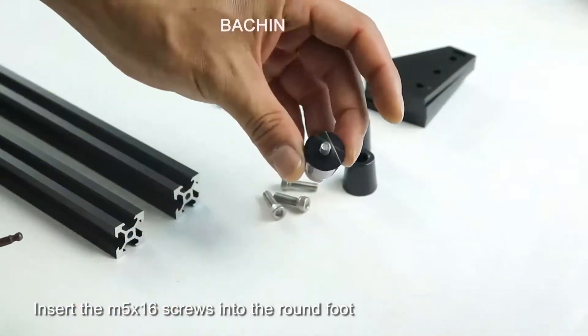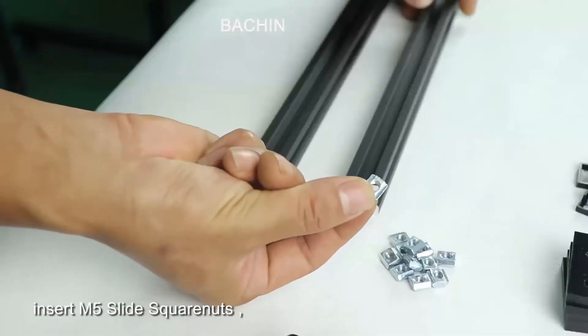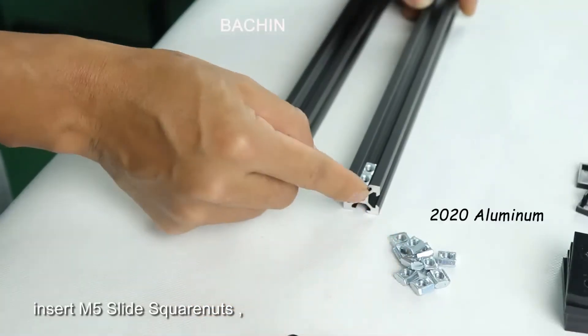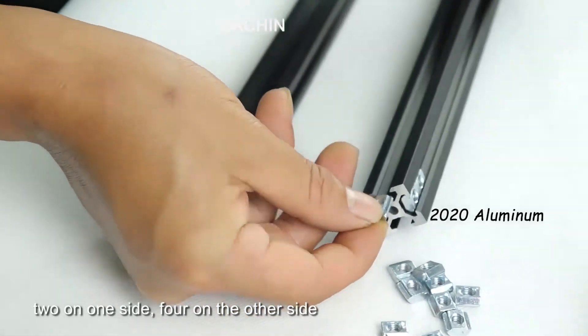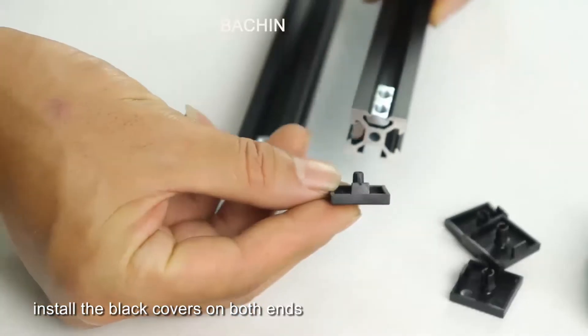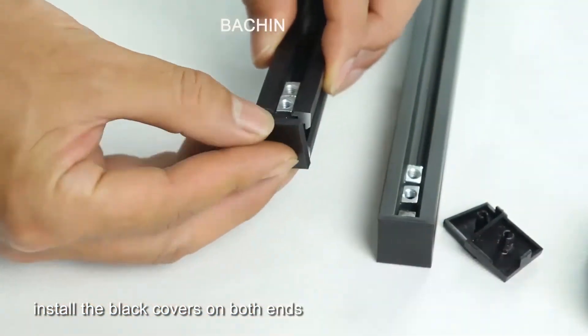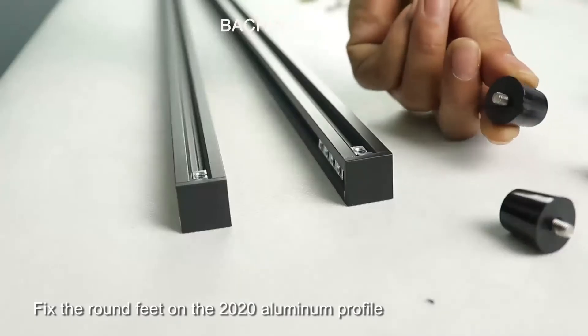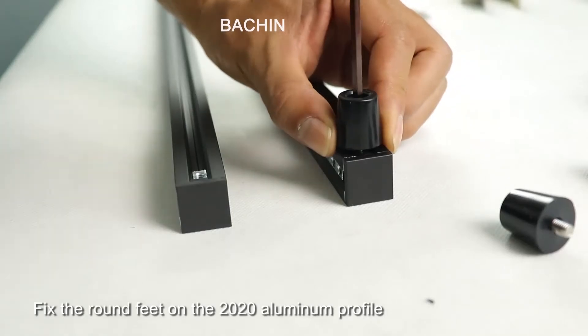Insert M5x16 screws into the round foot. Insert M5 slide square nut, two on one side, four on the other side. Install the black covers on both ends. Fix the round feet on the 2020 aluminum profile.